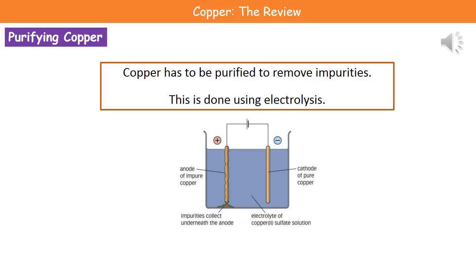Now the copper we get from the ore isn't pure — we've got other things in there known as impurities. So before we can use it for things like our electrical wires we need to purify the copper and remove those impurities. To carry out that process we use a process called electrolysis.